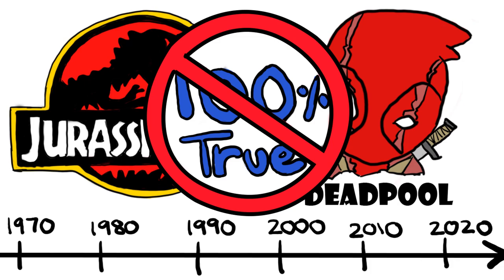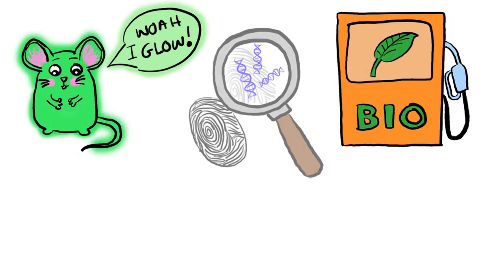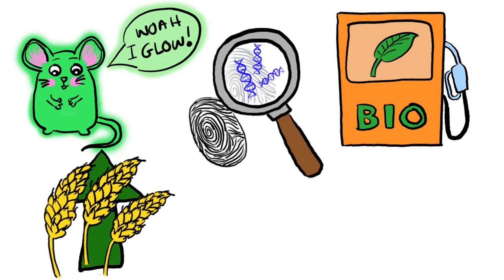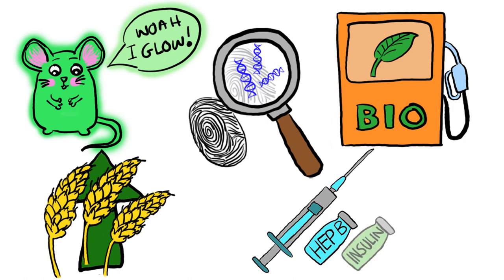This massively impacted society with the development of transgenic animals, biofuels, DNA fingerprinting, increasing agricultural yield and advancements in medicines such as vaccines like hepatitis B and industrial production of synthetic proteins such as human insulin. But how did this all begin?